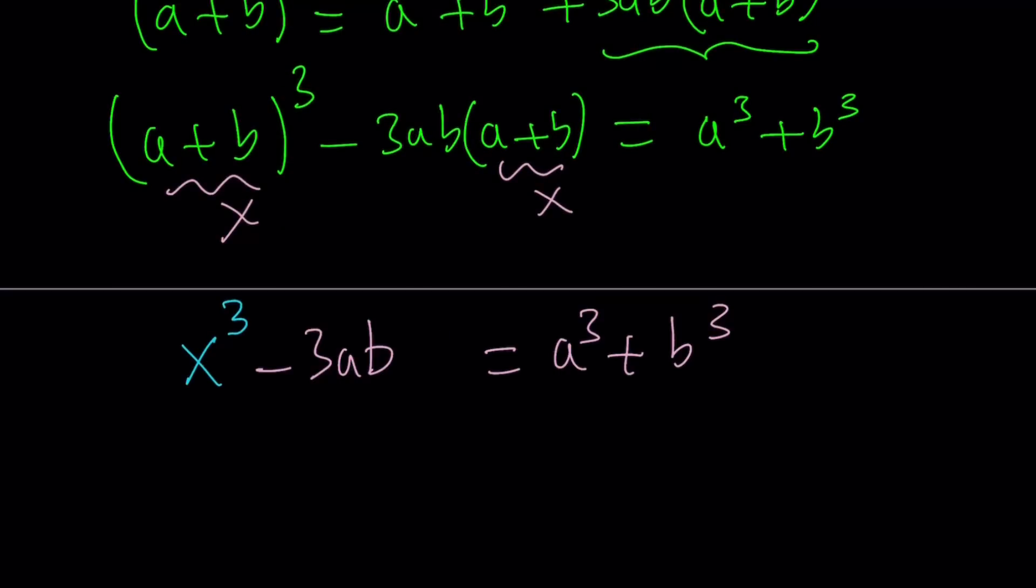So we have something like this: x³ - 3abx equals the following. Now, we kind of have a reduced cubic because we don't have any x², but that's fine because the cubic we're given is also a reduced cubic.